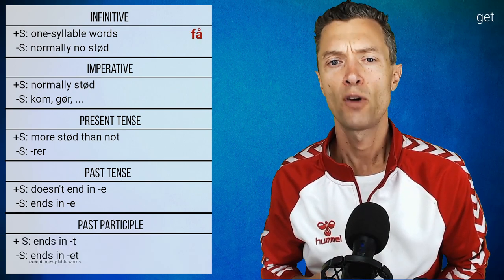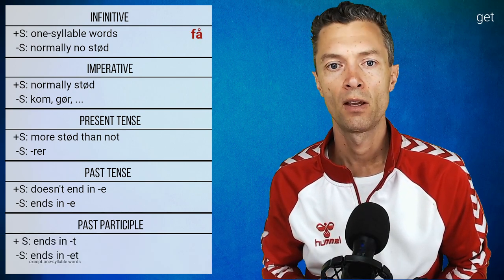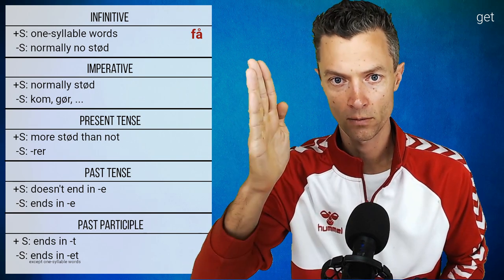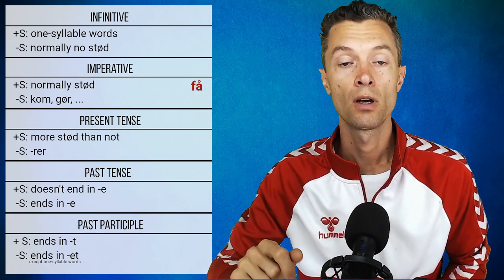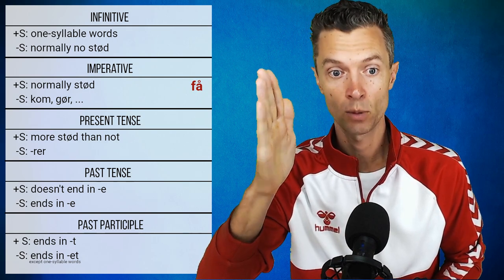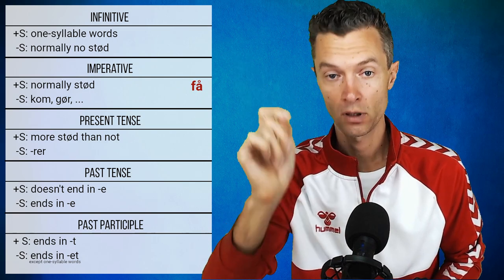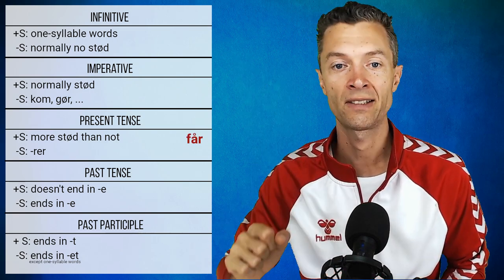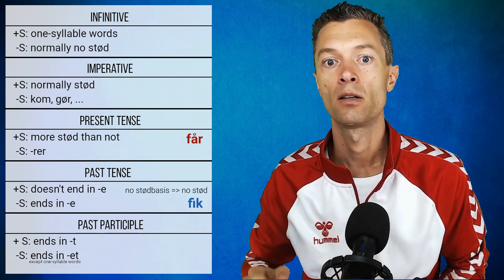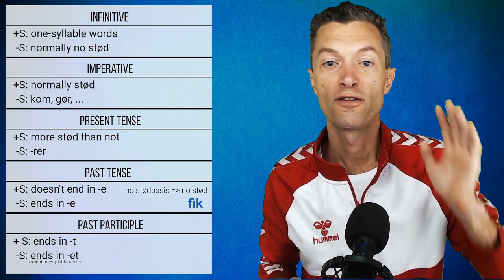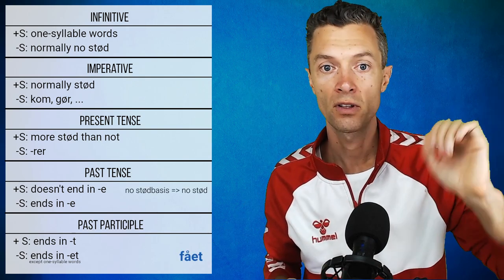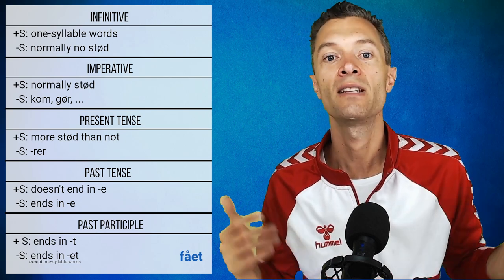Next verb: 'få'. Infinitive 'få' — stød, as we discussed — a one-syllable word with long vowel. Imperative 'få' — stød. Present tense 'får'. Past tense 'fik' — wait, 'foget' — ends in -et, so no stød. Past participle 'fået' — ends in -et, no stød.